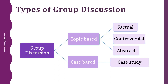In topic-based GDs, the group members are given a topic to discuss. A topic is typically in the form of a statement, and by the end of the discussion the group should arrive at a conclusion on the issue covered by the topic. Further, topic-based GDs are classified into three subtypes: factual, controversial, and abstract.